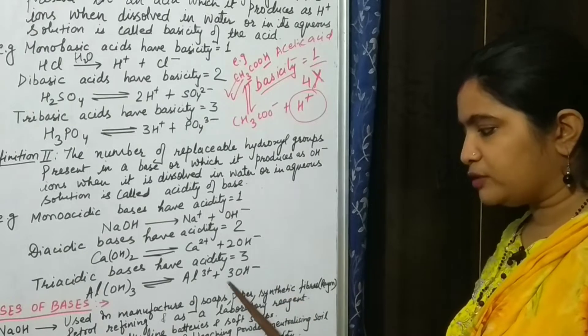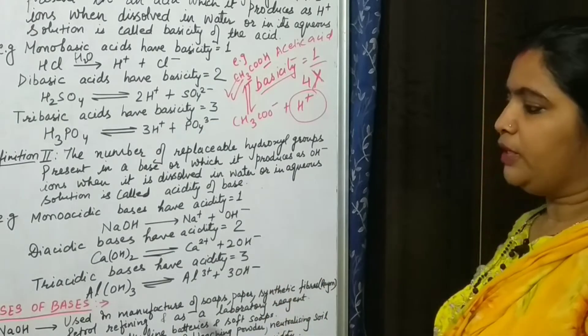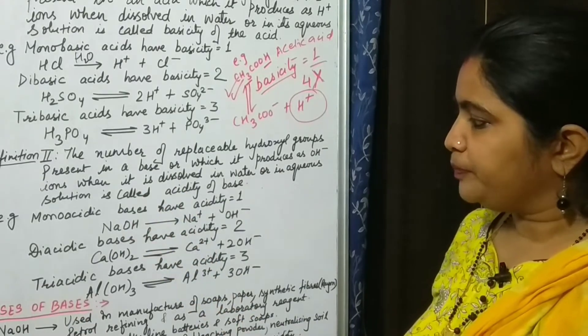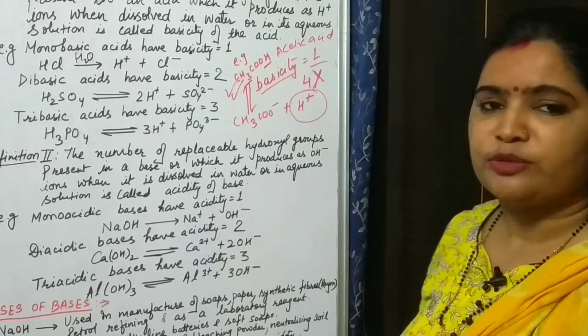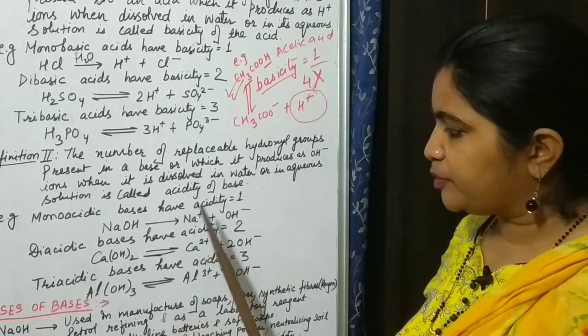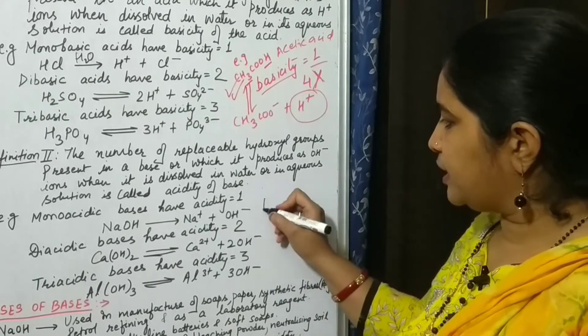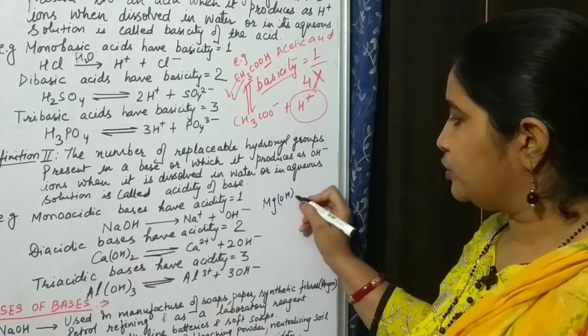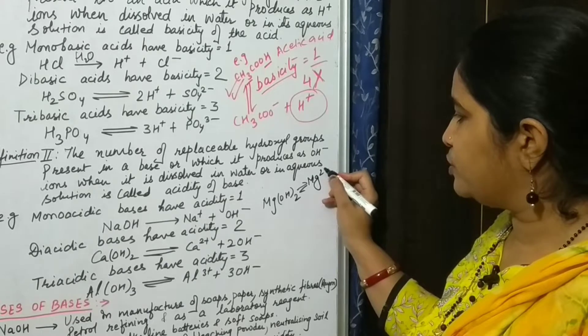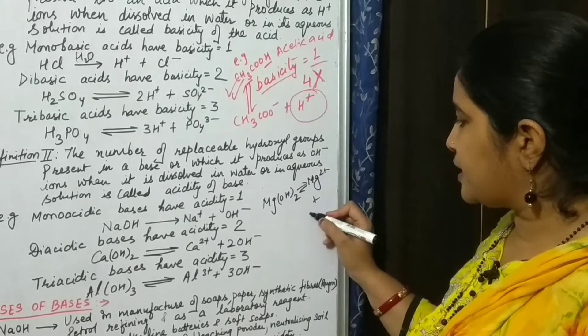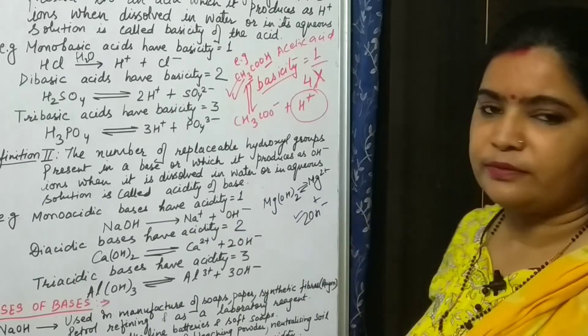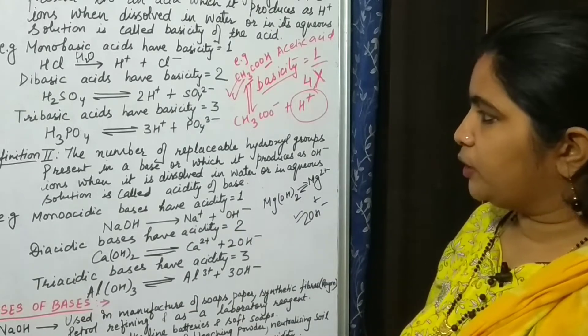Now you could also do one question. If I ask you what will be the acidity of magnesium hydroxide, you can easily find out its acidity will be two because it has capacity to produce two hydroxyl ions because its formula is Mg(OH)2. It is also a weak base. So whenever it will ionize it will produce Mg2+ and two OH- ions. So its acidity will be two.